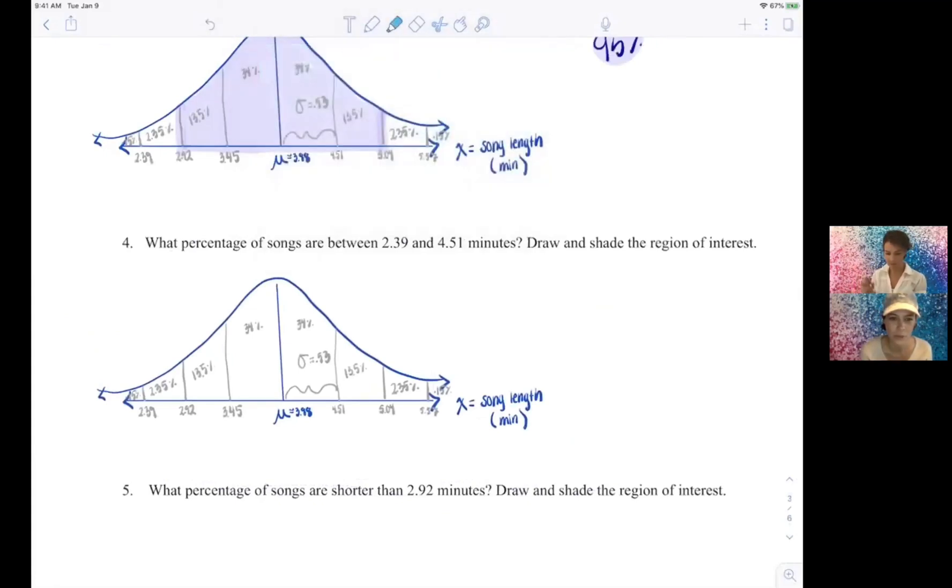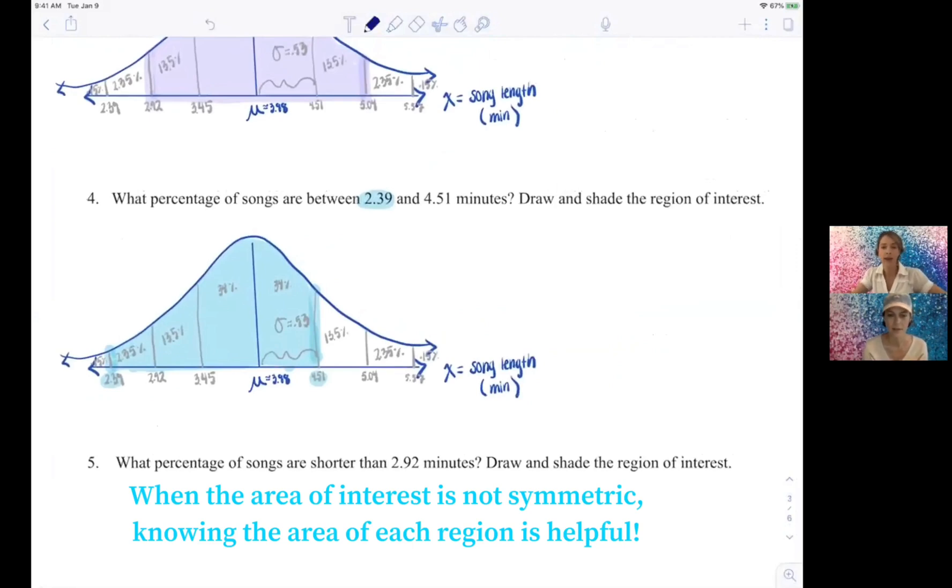So what percentage of songs are between 2.39 and 4.51? So same thing, we're just going to highlight between those two. Yeah, so this is one of those times when having the each little region labeled with its percentage is advantageous because it's not one of our perfectly symmetrical empirical rules sections.